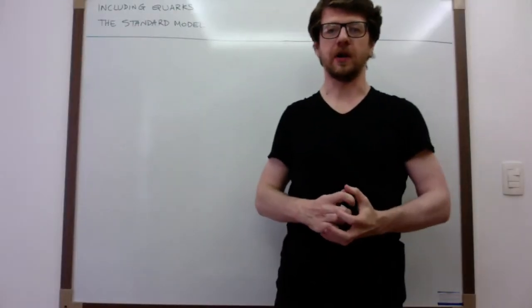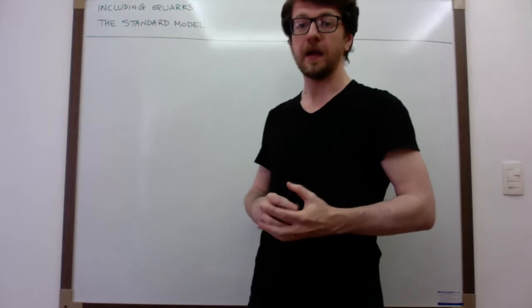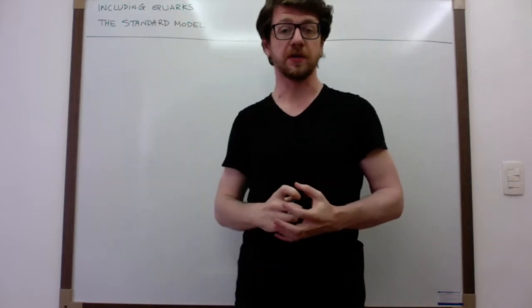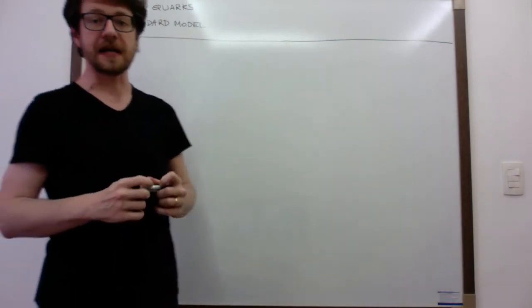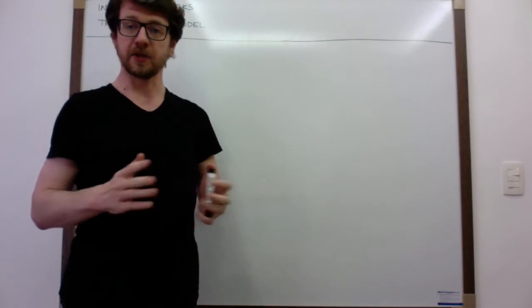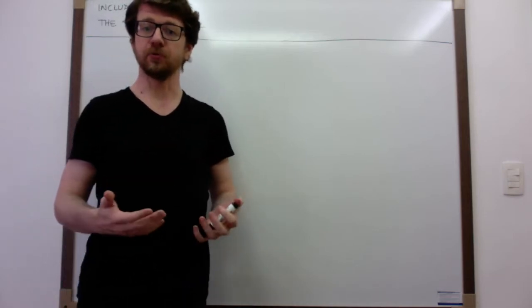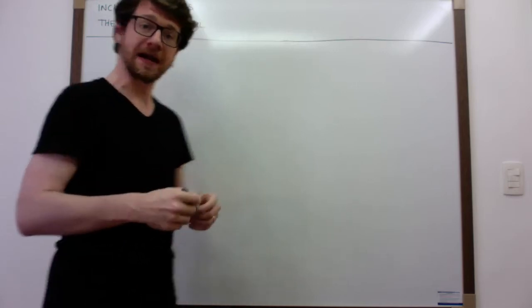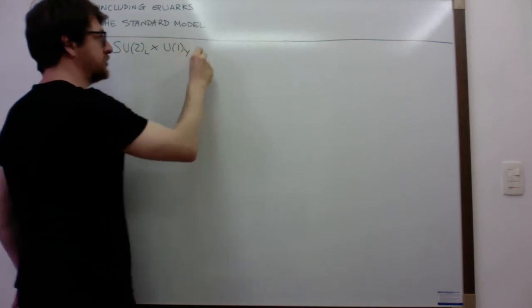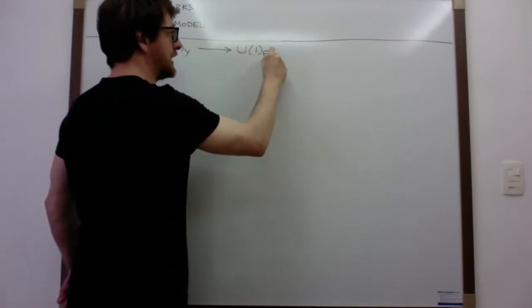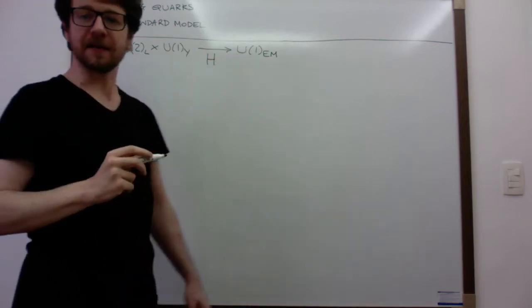Hi and welcome. Today we continue our discussion of the standard model. We're going to actually construct for the first time in these lectures what is the Lagrangian of the standard model. But first of all, we need to discuss how to include quarks in all the machinery that we have been mounting in the last few years. So let me go back to the case of neutron decay. We saw how to analyze the muon decay and we got to the conclusion that the right theory able to reproduce Fermi theory in the muon decay at low energy is SU(2)_L cross U(1)_hypercharge, spontaneously broken to electromagnetism. And we know that this spontaneous breaking is mediated by a Higgs doublet H.